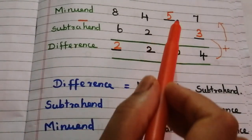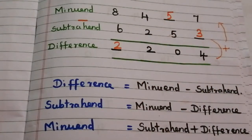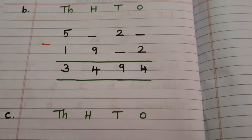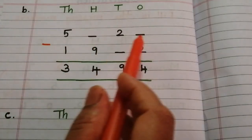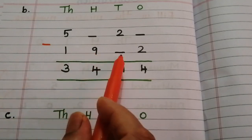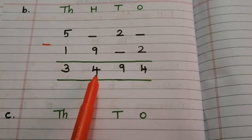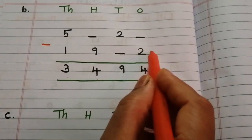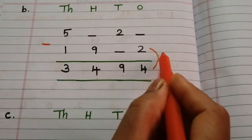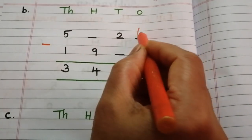Problem B: 5_2_ minus 19_2 equals 3494. To find the missing digit in the minuend, we add 4 plus 2, which is 6.